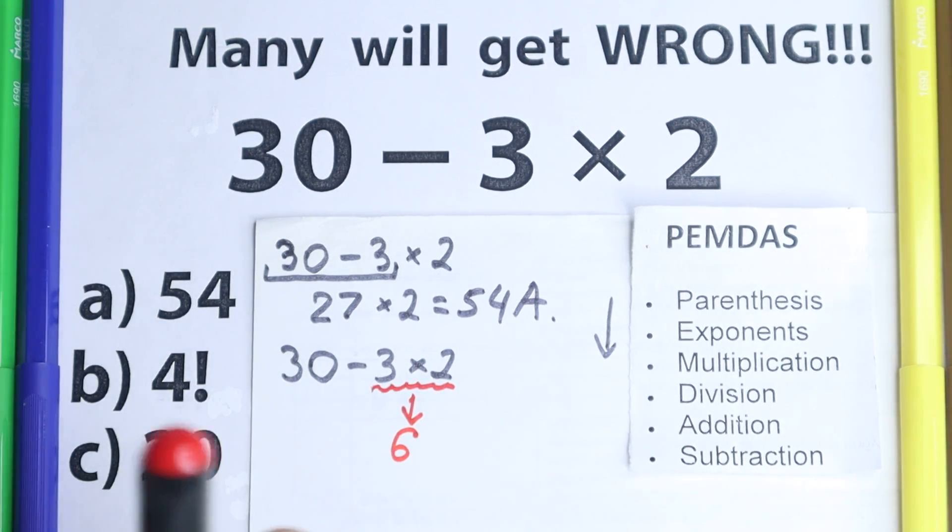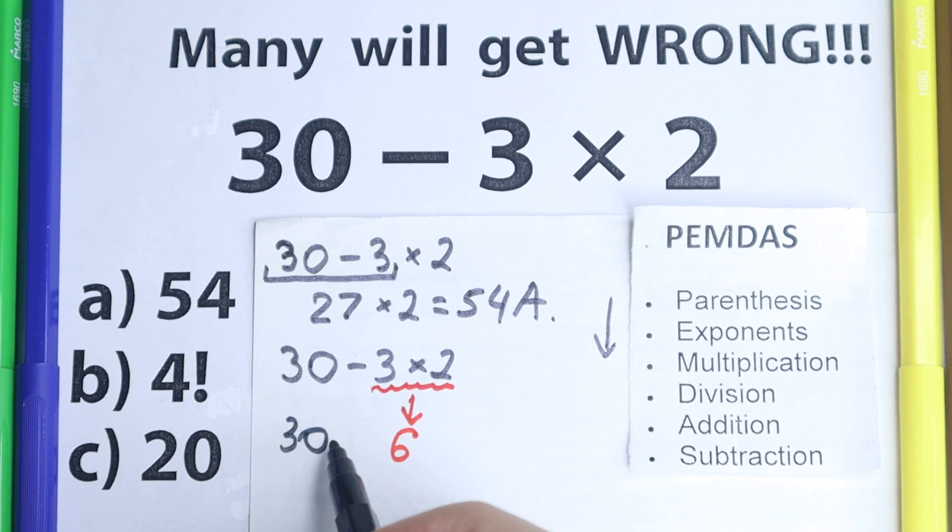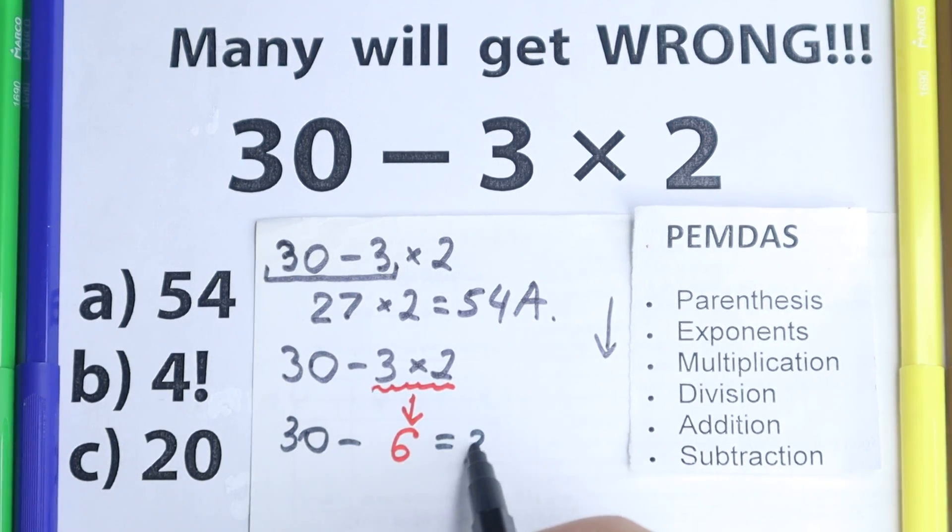And then 30 minus 6, which is equal to 24.